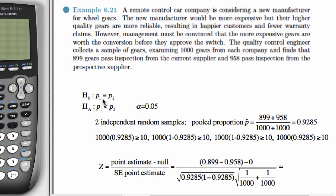So our null hypothesis is that the true proportions that would pass inspection are the same for the two groups. And our alternate hypothesis, the one we're trying to see if there's evidence for, is that the prospective supplier has a higher rate of passing inspection than the current supplier.